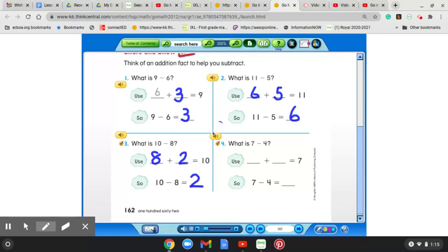Now on number 4, 7 minus 4. Very good. And I hope you said 7 minus 4 equals 3. So now we turn this around into an addition sentence, and we would say that 4 plus 3 equals 7. Great job.